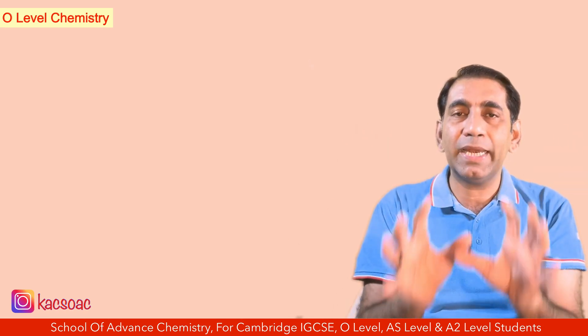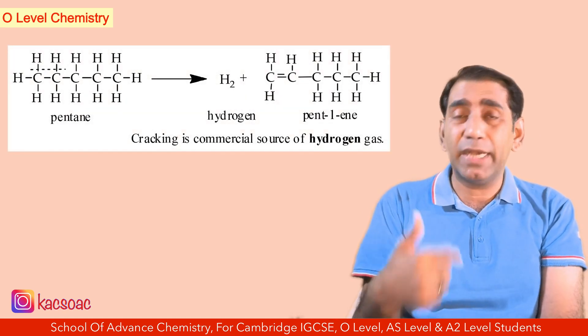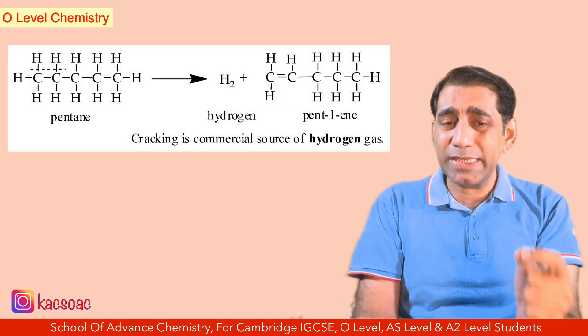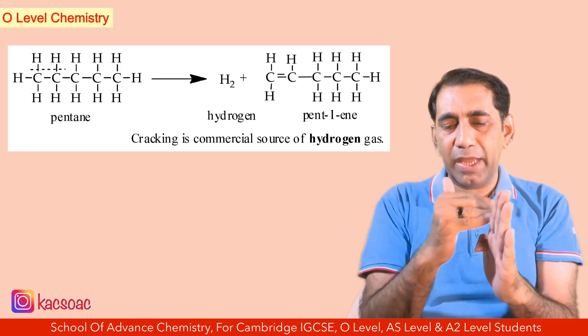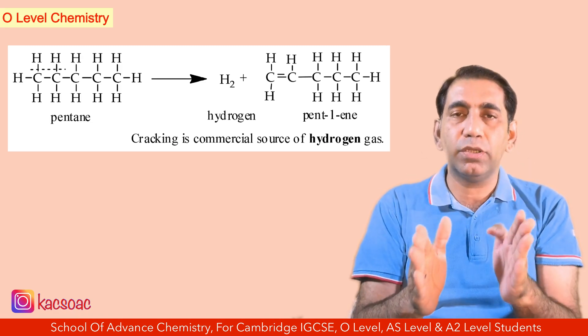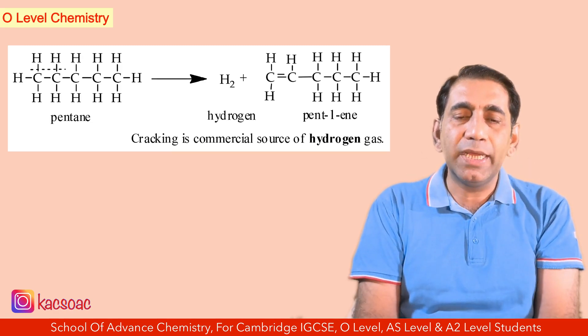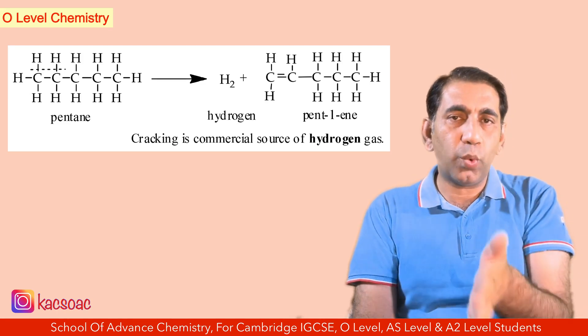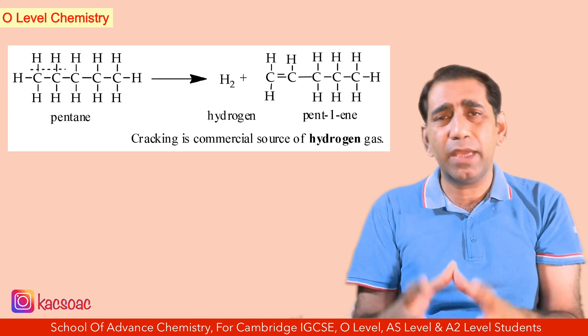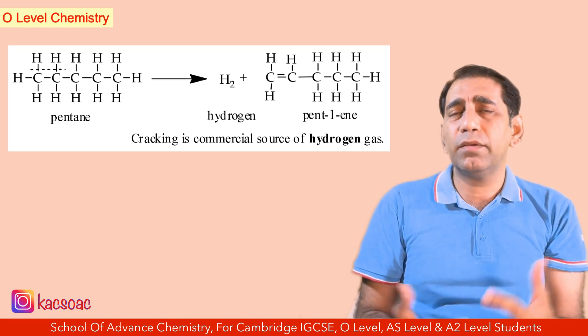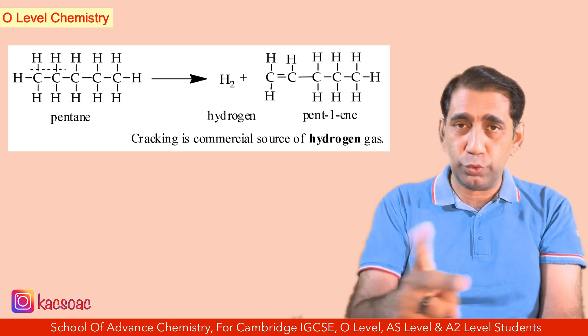Now, how do we crack a molecule and what are the possible outcomes? For example, starting from pentane — a normal alkane — the smallest molecule that can be made is hydrogen. If we break two C–H bonds, a hydrogen molecule is formed and pent-1-ene is formed. This is one possible option when breaking this molecule into two parts.